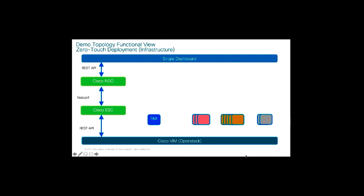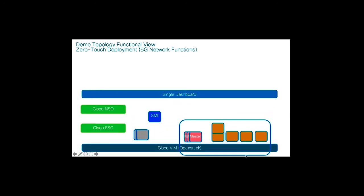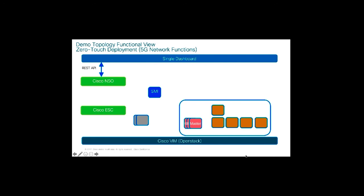Virtual machines to be created include the SMI Cluster Manager, Kubernetes masters, Kubernetes workers, and the UPF. The next step creates the 5G network functions by sending REST API to Cisco NSO to start Day 1 configuration. NSO communicates to the SMI and the UPF to install Day 1 configuration and all 5G Packet Core network functions like AMF, SMF, PCF, and NRF.